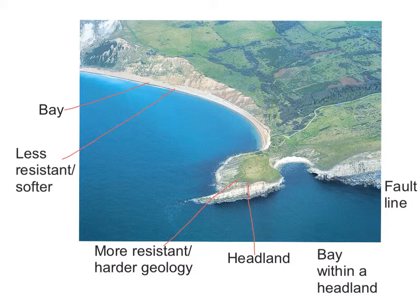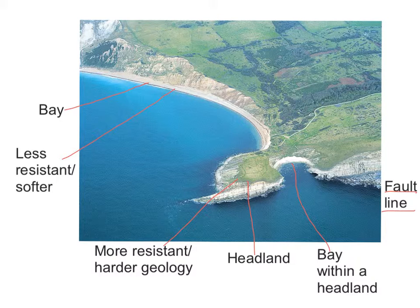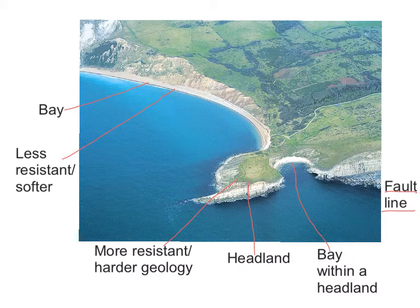Interestingly, on this headland there is a small bay within the harder geology. This can happen mostly because somewhere along this harder geology there is a fault line — an extra set of cracks within the geology which has caused erosion to increase. Other things you may spot with a keen eye include a cave, some small crevices, and even the beginnings of a wave cut platform.